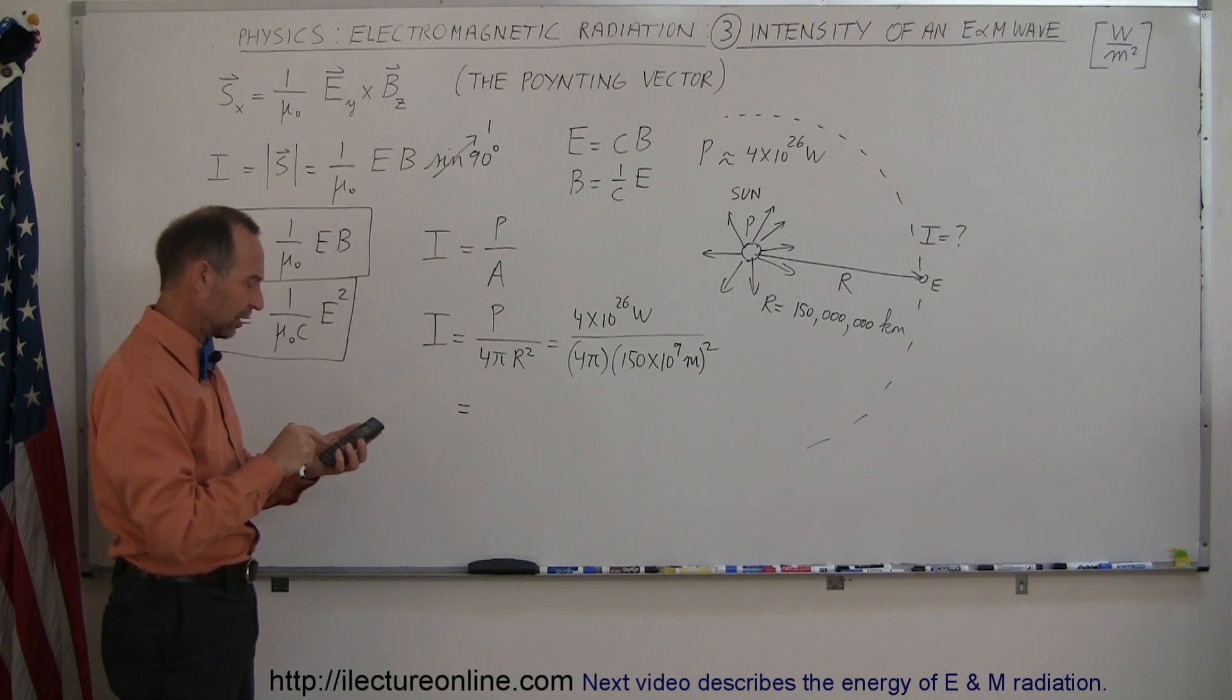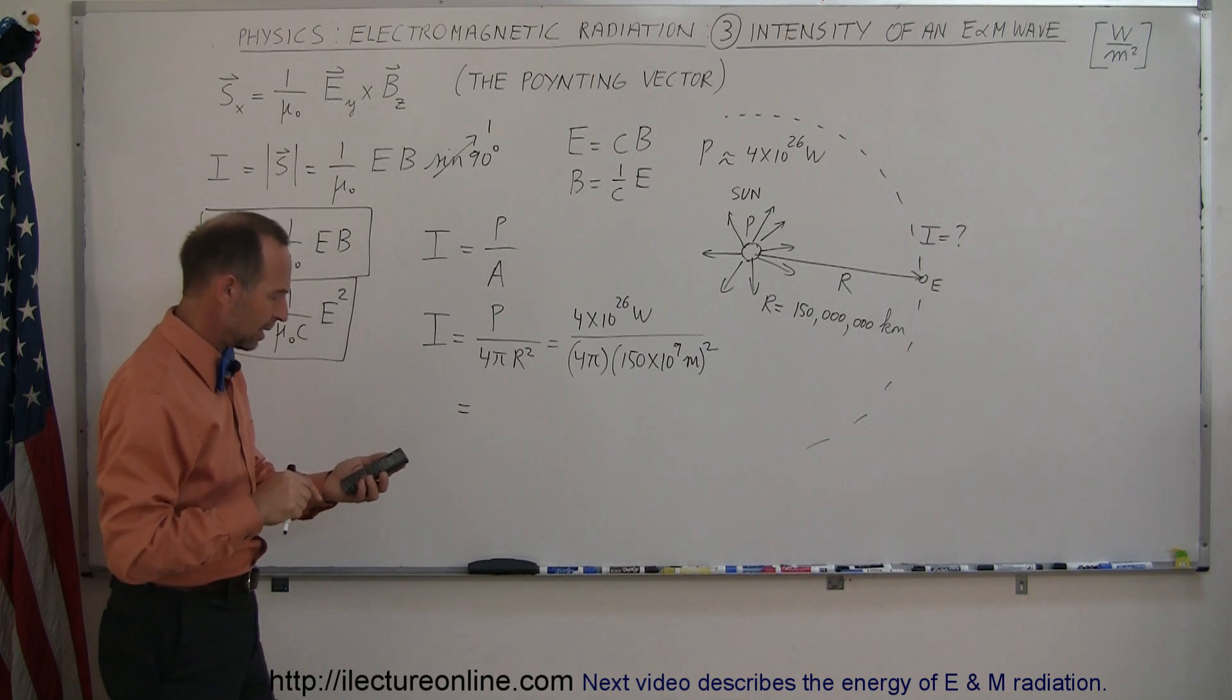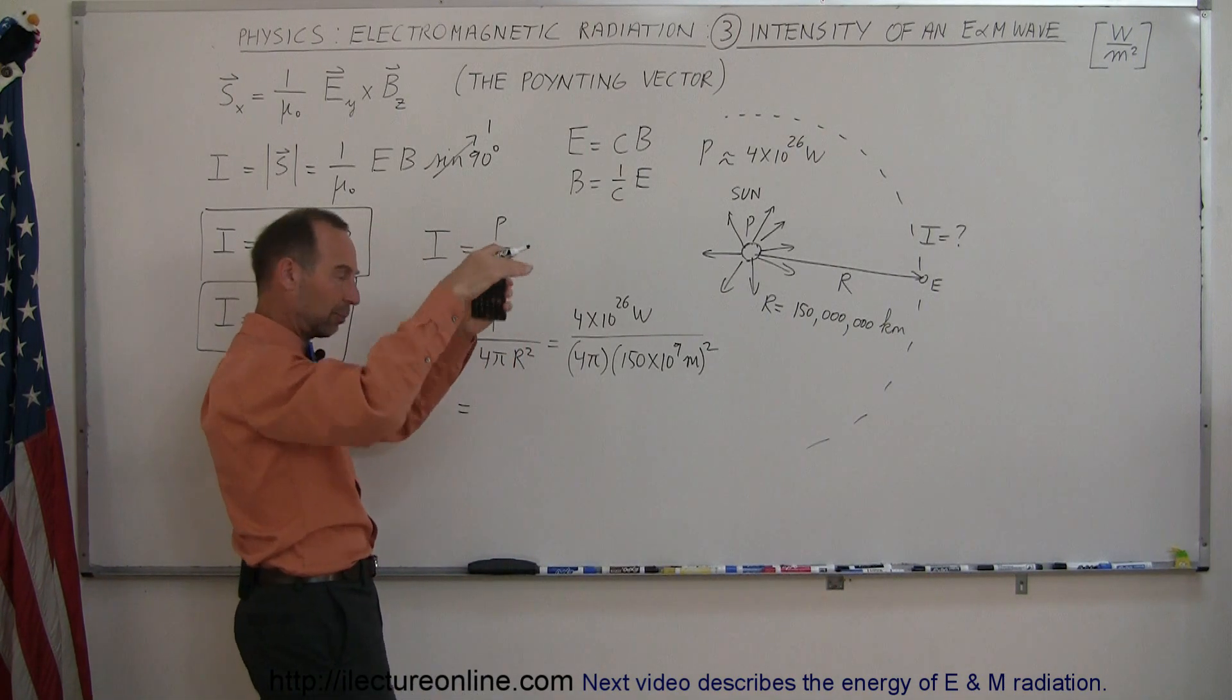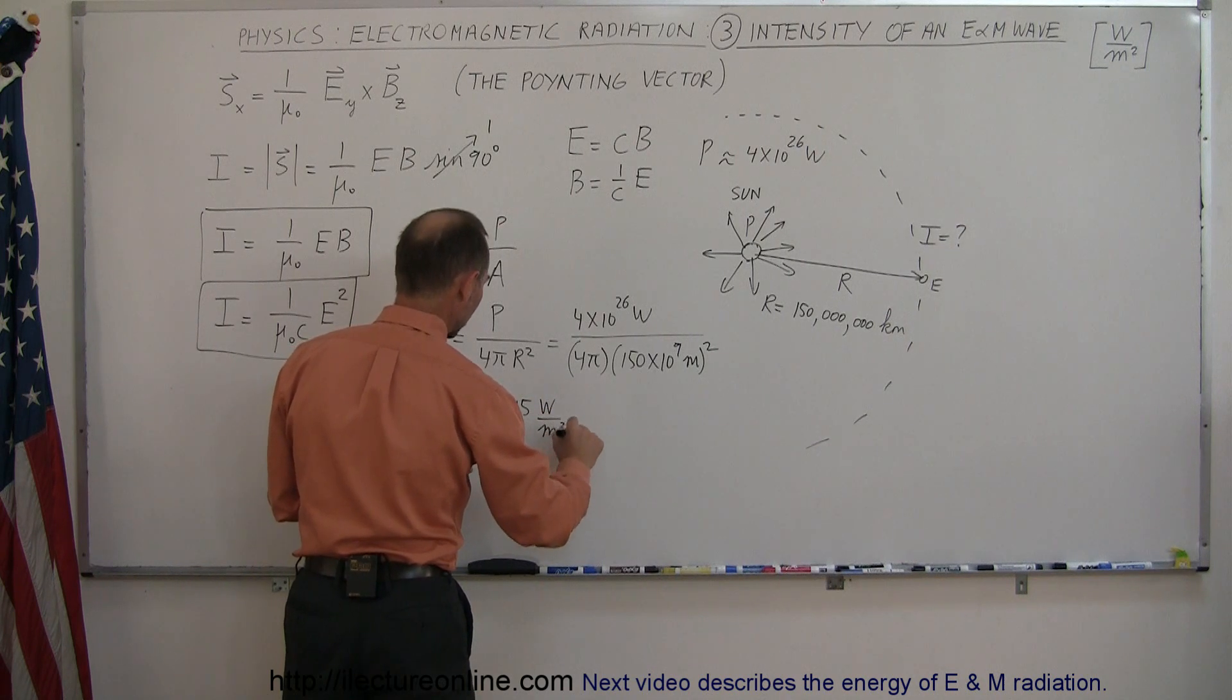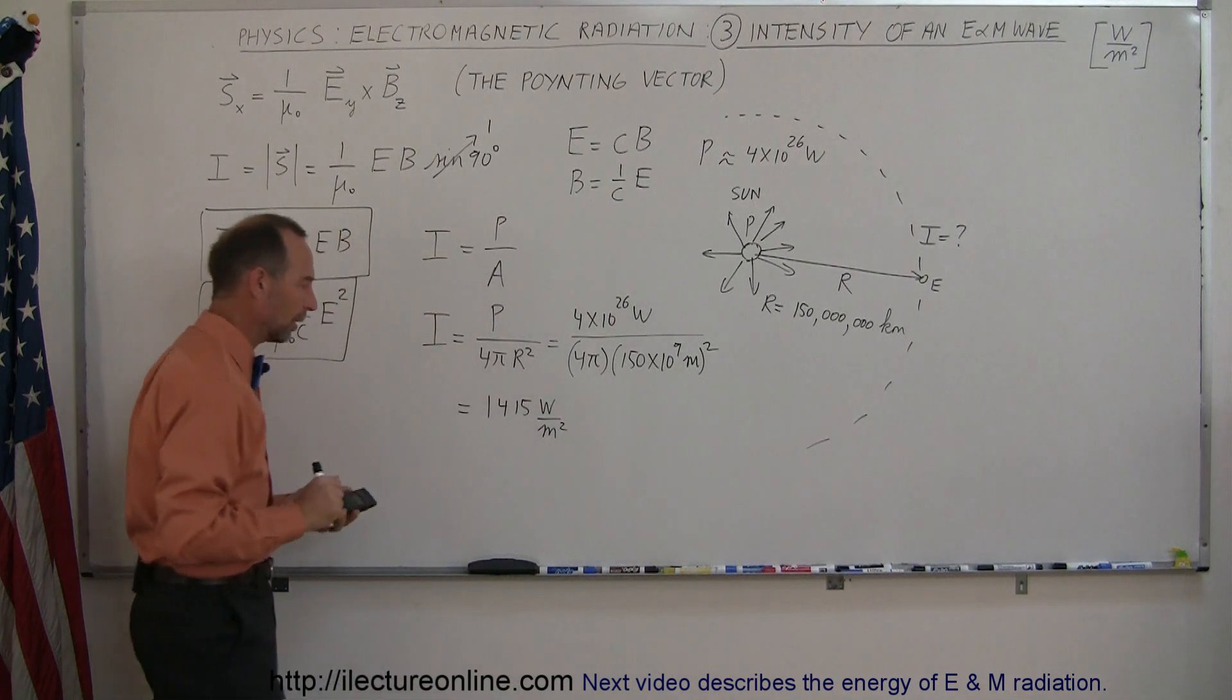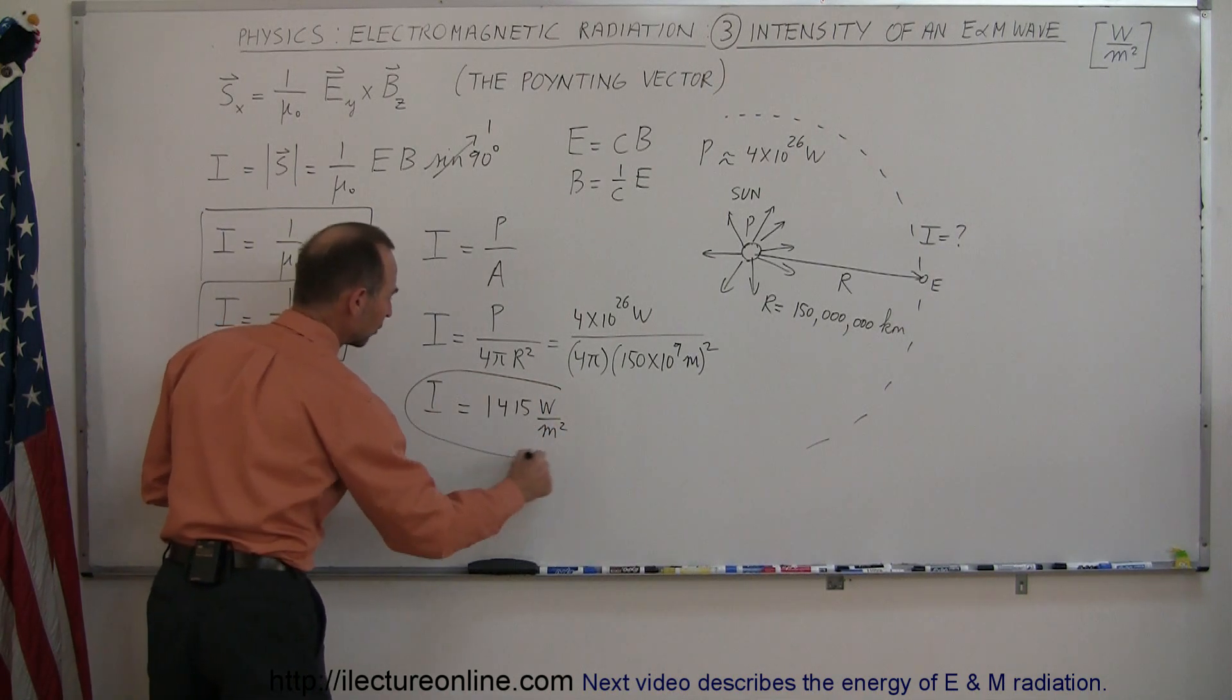So we have 4e26 and we divide it by 4, divide it by π, and divide it by 150e9 squared. And the amount of energy that we receive at the surface, at the top surface of the atmosphere would be 1,415 watts per square meter. So that is power over area or distance squared. So that would be about the amount of energy we get from the sun, or that should be the intensity of the sunlight when it reaches the Earth.